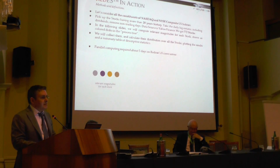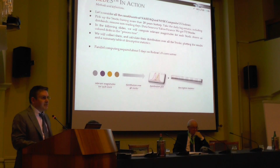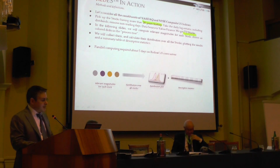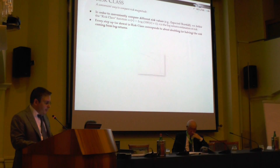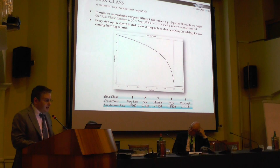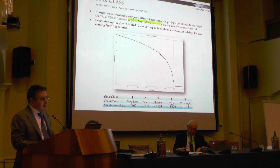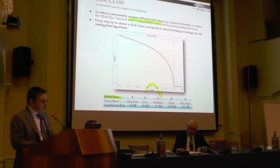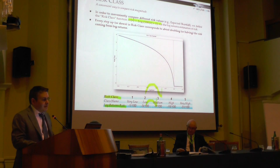We consider our testing set — all constituents of the NYSE and NASDAQ indexes with more than 20 years of history — yielding about 1,000 US equity stocks. Before going on, we define a risk class function as log base 2 of the risk measure applied to log returns. Think, for example, of expected shortfall. In this way, we can calculate meaningful differences between risk classes, where every step up or down corresponds to approximately doubling or halving the risk — resembling a decibel-like scale.